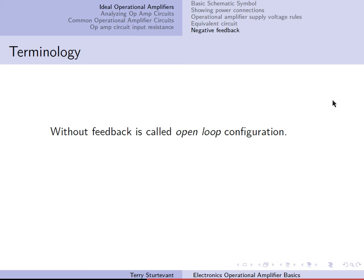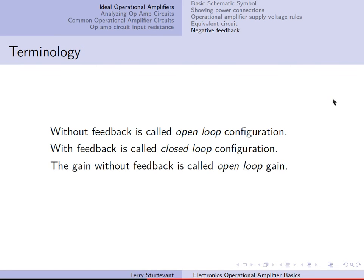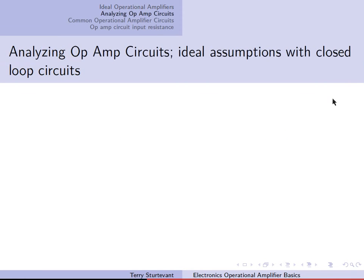Without feedback, an op-amp circuit is called the open-loop configuration. With feedback, it's called the closed-loop configuration. The gain without feedback is called the open-loop gain. The gain with feedback is called the closed-loop gain.